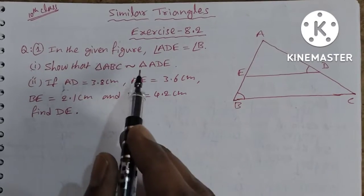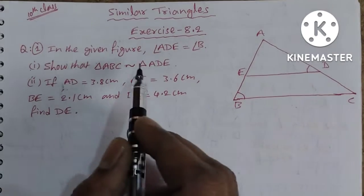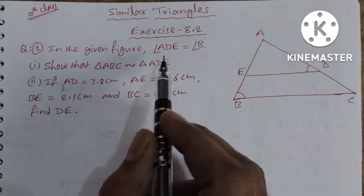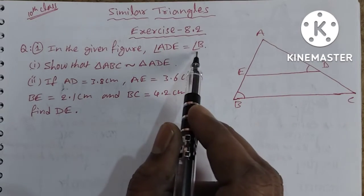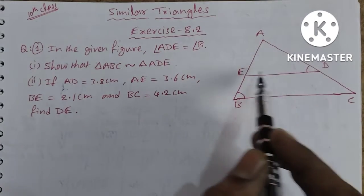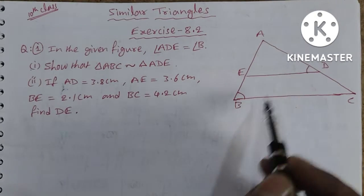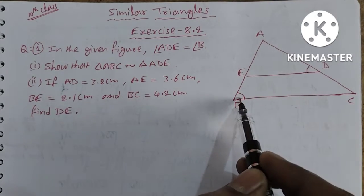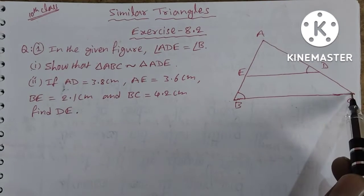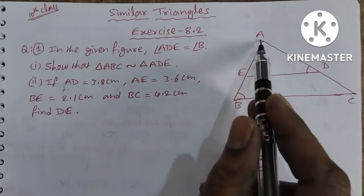This chapter will most probably be completed here. First question: in the given figure, we have a diagram with Triangle ABC. Angle ADE is equal to Angle B. These two angles are equal.